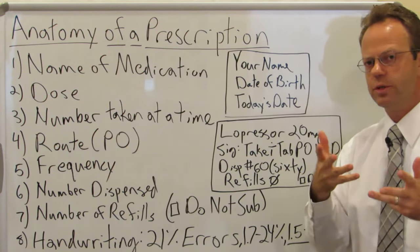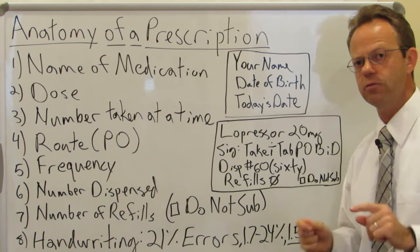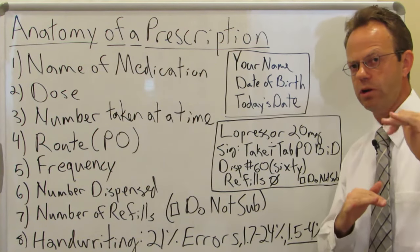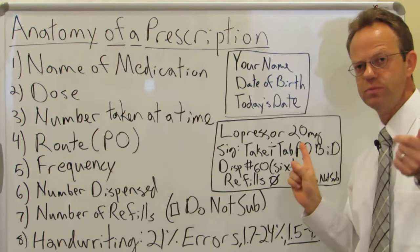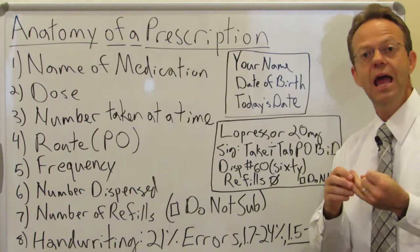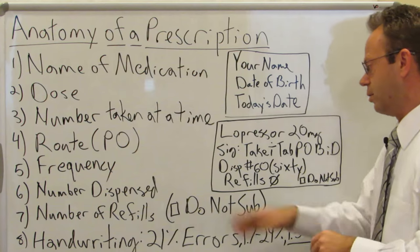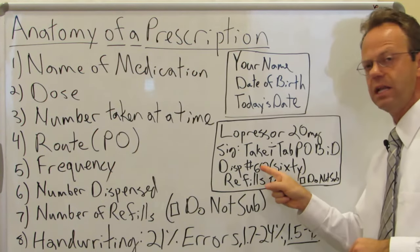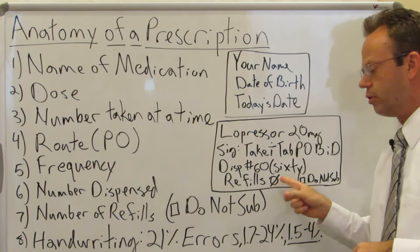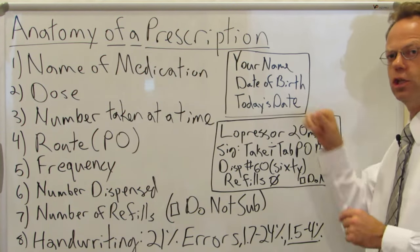Next line is SIG, which is how you're supposed to take it. 'Take one' — the way numbers are written on a prescription pad is different; the number one is a dot, a line, and then another line. One tab, PO (by mouth), BID means twice a day. The most common abbreviations are BID for twice a day and Q-day or Q-daily for once a day. Dispense 60 — notice it's the number plus you write out the word 60. Number of refills: zero. And the do not substitute box — that's what it would actually look like on the prescription.